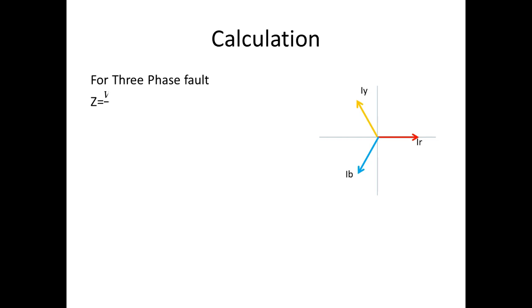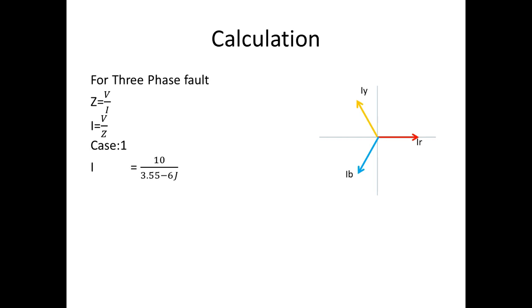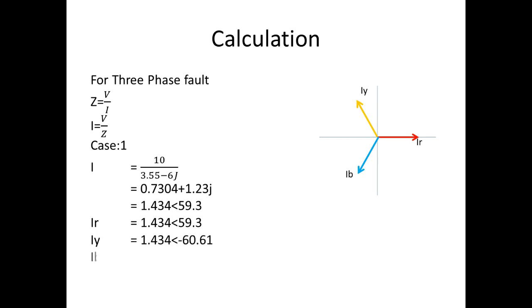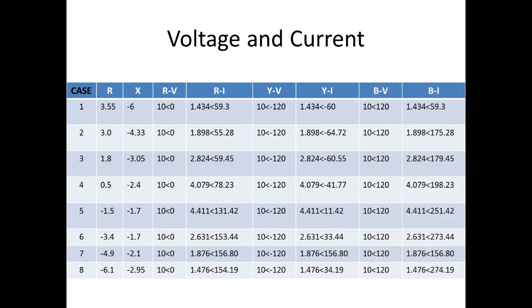For a three-phase fault, Z equals V divided by I, where I equals V divided by Z. For Case 1, substituting the values taken from the graph, I got 1.434 at angle 59.3 degrees. Since we are using a symmetrical fault, each phase current has a 120-degree shift: IR equals 1.434 ∠59.3°, IY equals 1.434 ∠−60.61°, and IB equals 1.434 ∠179.38°. We have to find similar values for all remaining points.